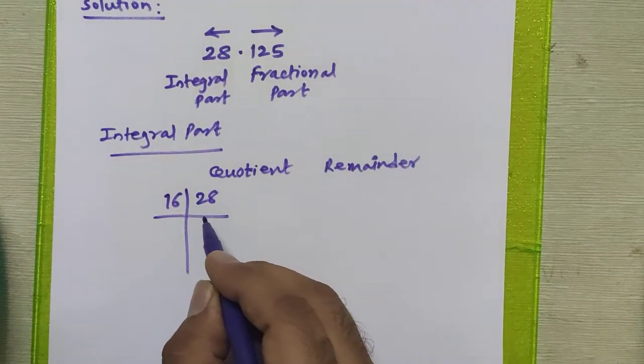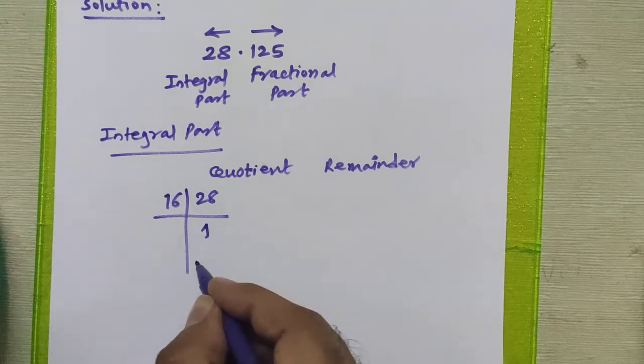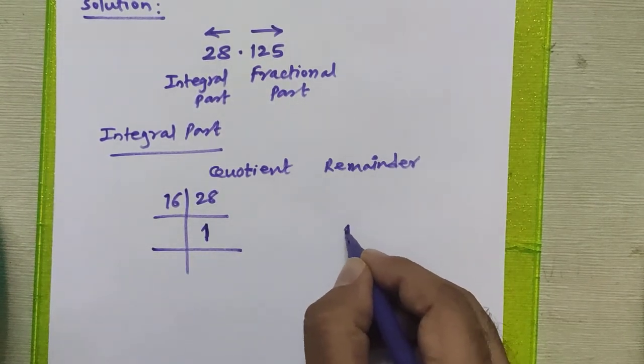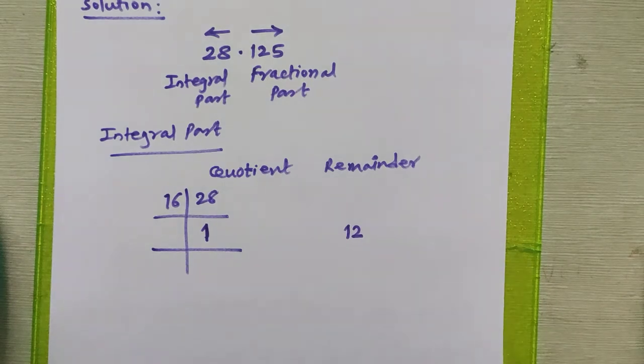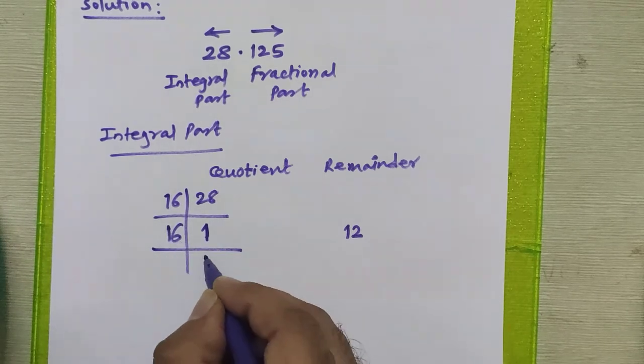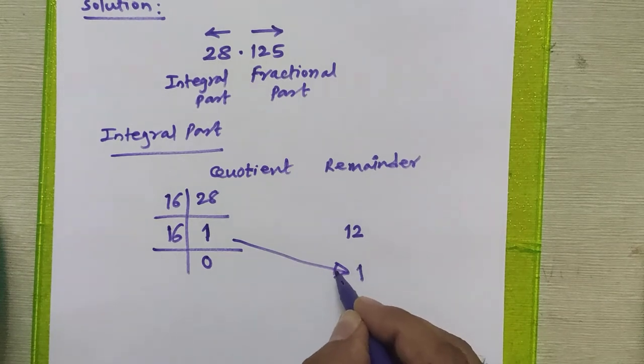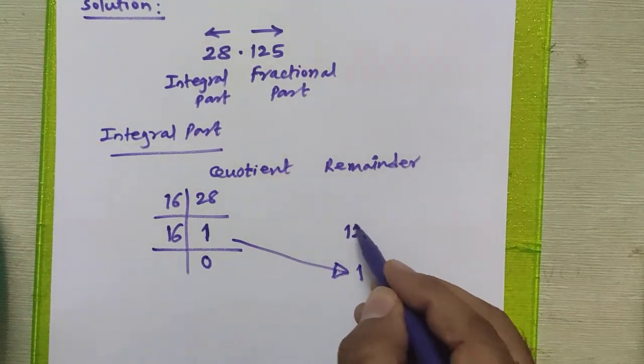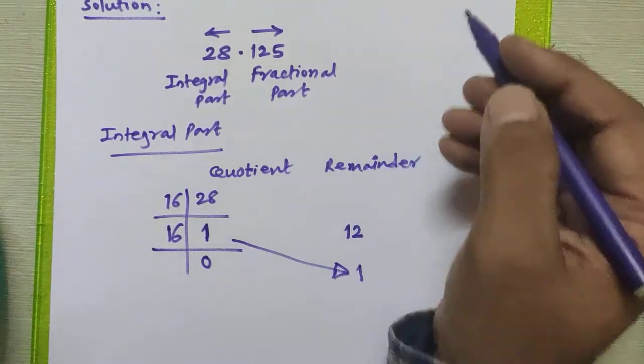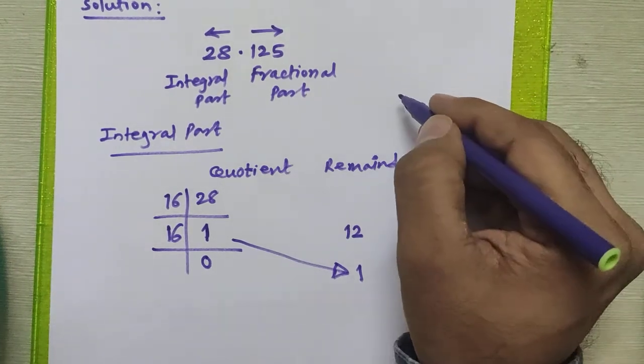When you divide 28 by 16, your quotient becomes 1, whereas the remainder is 12. Then again try to divide this 1 by 16. Now how to convert this 12 into hexadecimal? Hexadecimal number system has valid digits from 0 to 15.